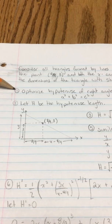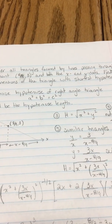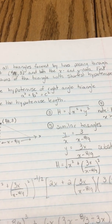But the question is asking us, back to step one, to optimize the hypotenuse of a right angle triangle.